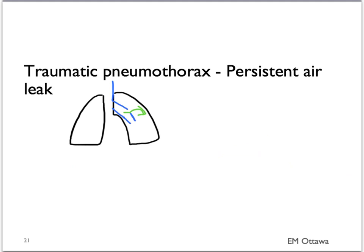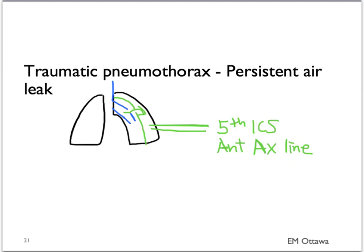For a patient with a persistent air leak from the tracheobronchial tree, they will still need a chest tube first — again in the 5th intercostal space, anterior axillary line. What you will notice is that despite having a chest tube in place, the patient still has a persistent pneumothorax. This patient will need to go to the operating room for definitive repair. It is best to discuss with your surgeon.